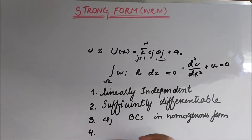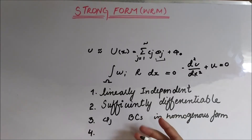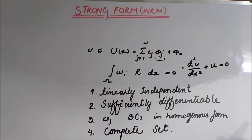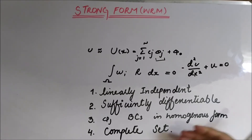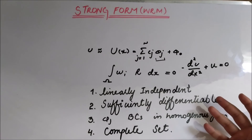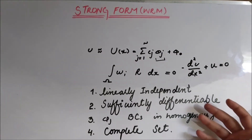The fourth condition is the complete set. We have also talked about the complete set or the completion of the polynomial in previous videos when we discussed the conditions of the weight and shape functions regarding the Ritz method or the weak form.